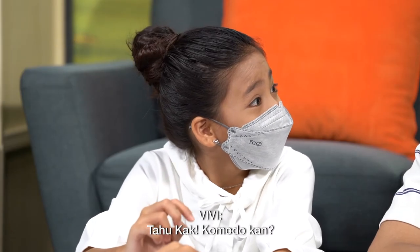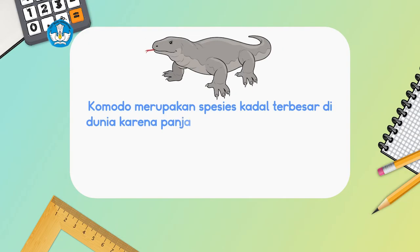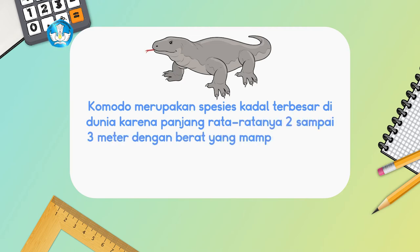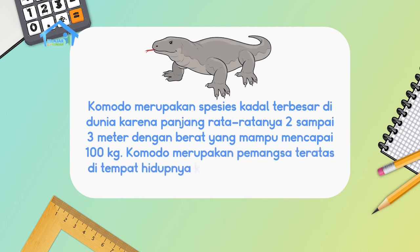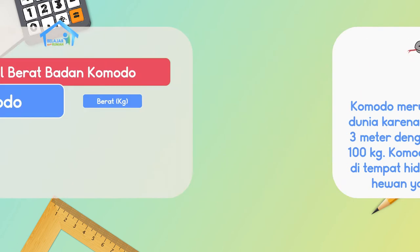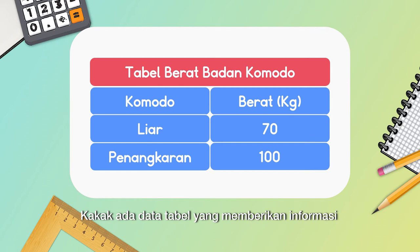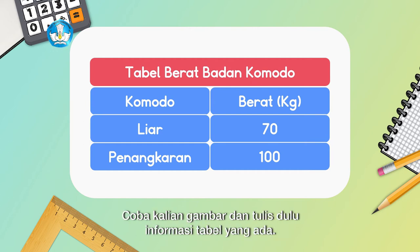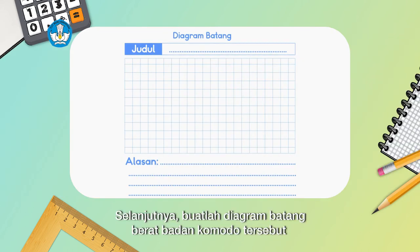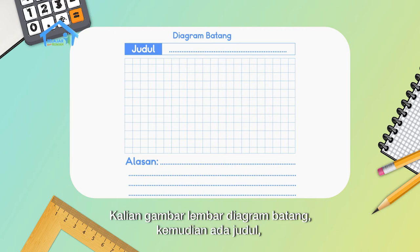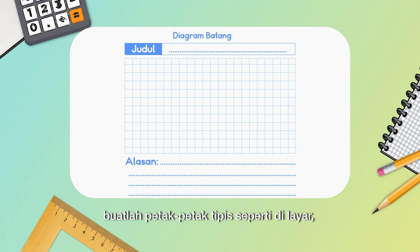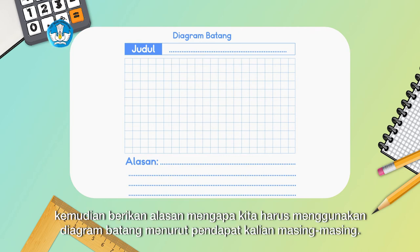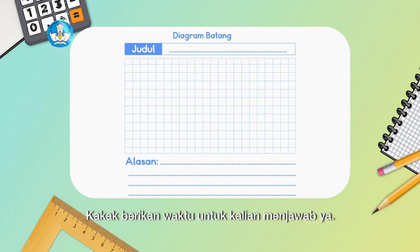I know, Kak — it's the Komodo, right? Exactly! The answer is the Komodo. The Komodo is the largest lizard species in the world, with an average length of 2–3 meters and a weight that can reach 100 kg. The Komodo is the apex predator in its habitat because no animal is larger than it. Now look carefully — Kakak has a data table giving information about the weight of Komodo dragons by habitat type. Please copy and write the table information, then create a bar diagram of the Komodo's weight on graph paper as shown on screen, and provide a reason why we should use a bar diagram.